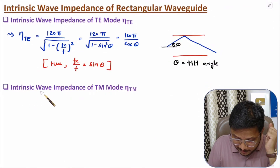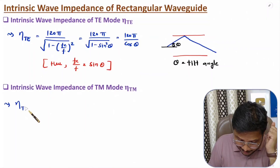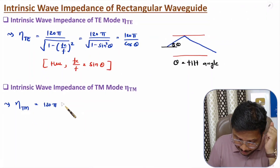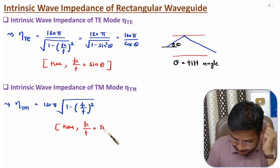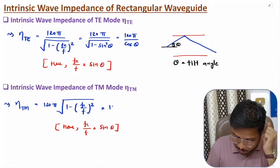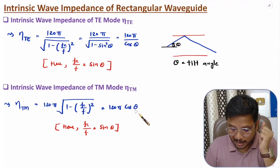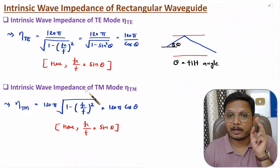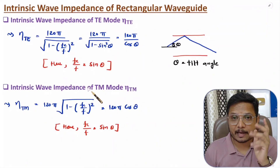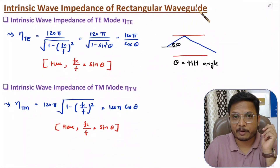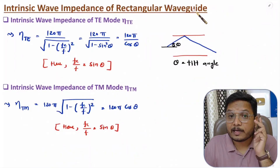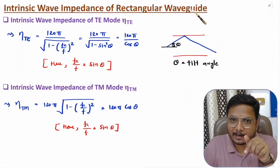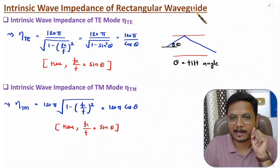For TM mode, intrinsic wave impedance is: eta_TM = 120π multiplied by the square root of (1 − (FC/F)²). Substituting FC/F = sin(θ) gives 120π times cos(θ). However, one should know that TEM mode is not possible in rectangular waveguide — so if a competitive exam asks for the intrinsic wave impedance of TEM mode in a rectangular waveguide, the answer is that it is not possible, not 120π.